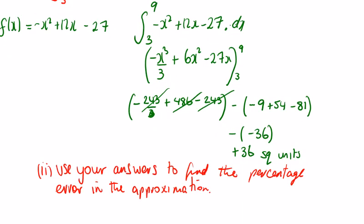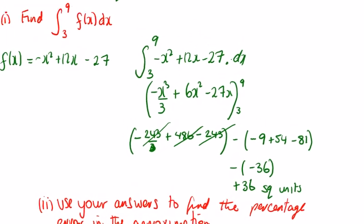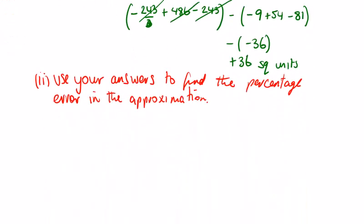The last part: use your answers to find the percentage error in the approximation. Well, 35 and 36, so the error was 1. It should have been 36, so percentage error is 1 over 36 times 100. We are asked correct to one decimal place in this question, so 2.77 becomes 2.8 percent correct to one decimal place.